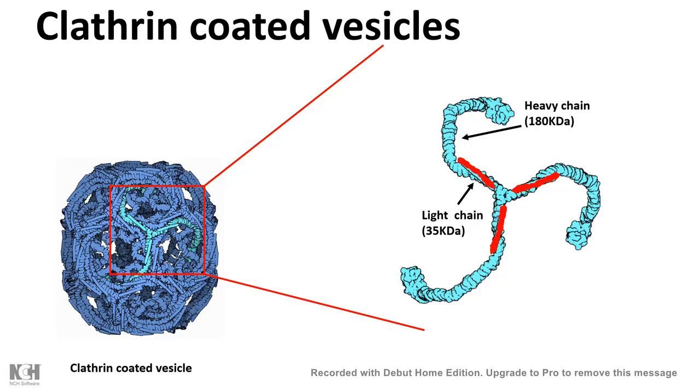This kind of clathrin coat helps to ensure that the vesicle identity is maintained while it is transported.